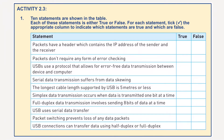Packets have a header which contains the IP address of the sender and the receiver. Well, that's true, because how does a packet know where it's going and where it's come from? It needs that IP address.